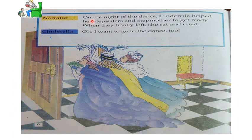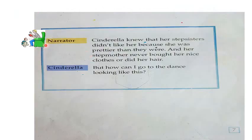The narrator: On the night of the dance, Cinderella helped her stepsisters and stepmother to get ready. When they finally left, she sat and cried. Cinderella: Oh, I want to go to the dance too. Cinderella knew that her stepsisters didn't like her because she was prettier than them, and her stepmother never bought her nice clothes or did her hair. Cinderella: But how can I go to the dance looking like this?